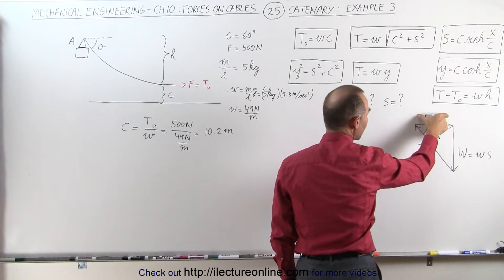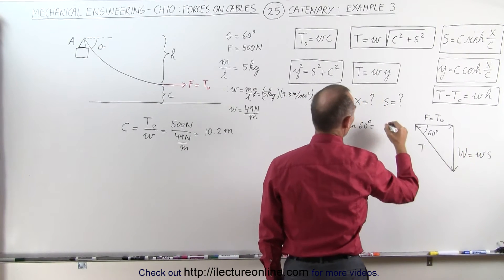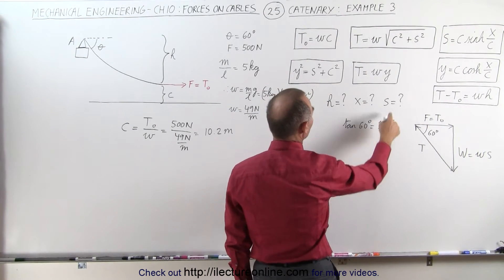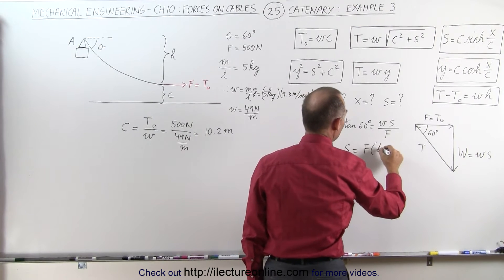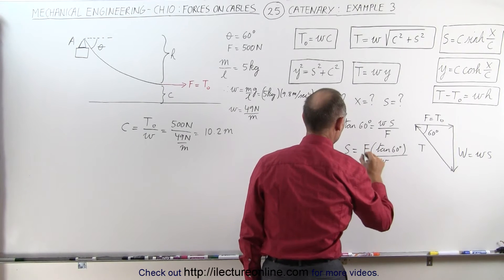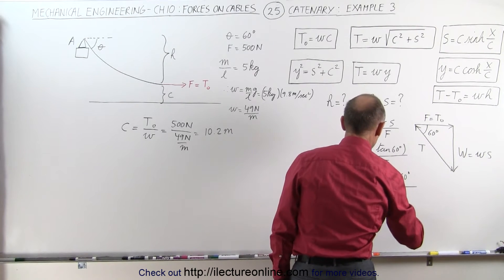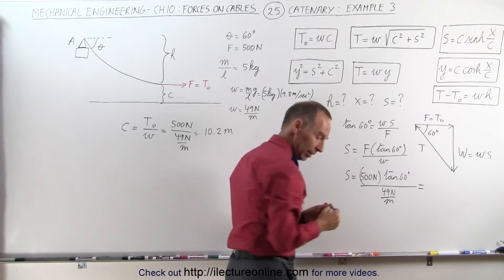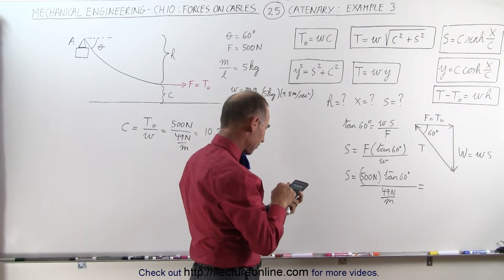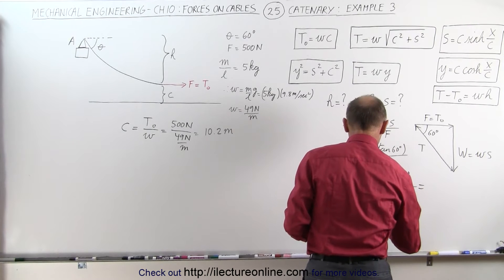Since we know the horizontal force, we can calculate s using the tangent of that angle. The tangent of 60 degrees equals the opposite side, which is the weight per unit length times the cable length s, divided by F. So s equals F times tan(60°) divided by the weight per unit length, which gives us s = 500 × tan(60°) / 49 = 17.67 meters.